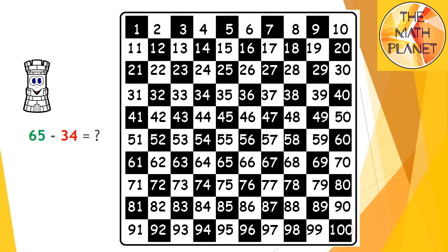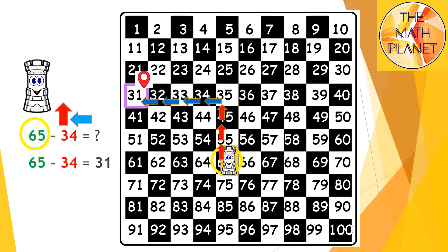Here's the hundred chart. My start point is 65 and here I am at 65. And then I'll move 3 steps up and 4 steps to the left. 1, 2, 3 steps up and then 1, 2, 3, 4 steps to the left. Destination point is 31, which is the difference.